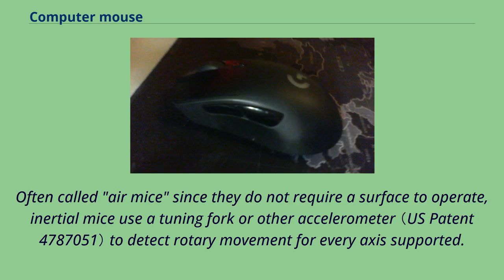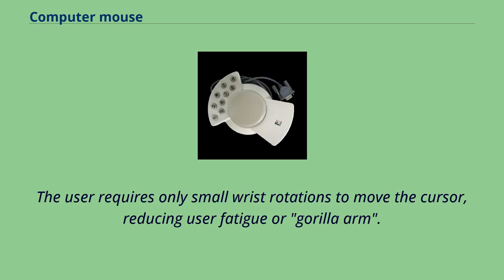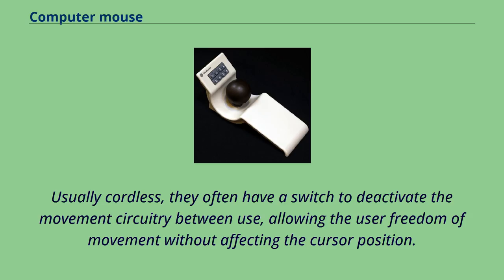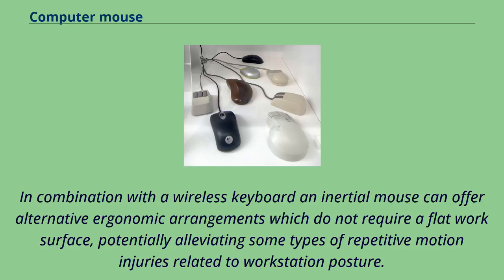Often called air mice since they do not require a surface to operate, inertial mice use a tuning fork or other accelerometer to detect rotary movement for every axis supported. The most common models work using two degrees of rotational freedom and are insensitive to spatial translation. The user requires only small wrist rotations to move the cursor, reducing user fatigue. Usually cordless, they often have a switch to deactivate movement circuitry between use. A patent for an inertial mouse claims such mice consume less power than optical mice, offering increased sensitivity, reduced weight, and ease of use. In combination with a wireless keyboard, an inertial mouse can offer ergonomic arrangements not requiring a flat work surface, potentially alleviating repetitive motion injuries.